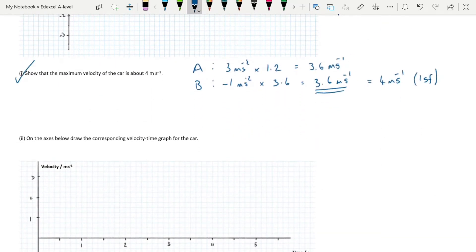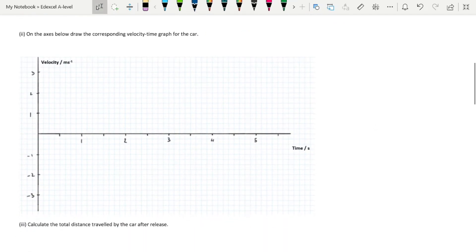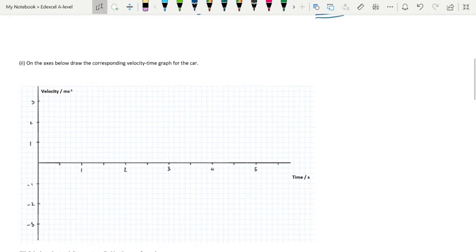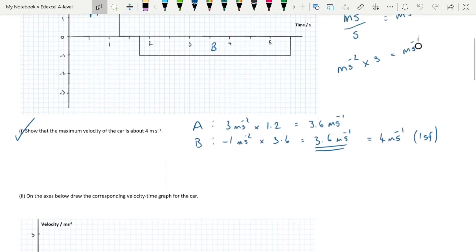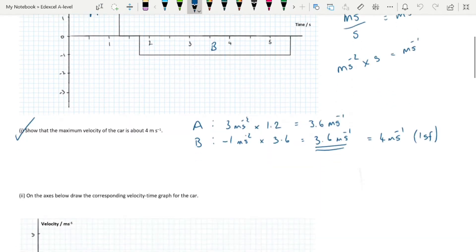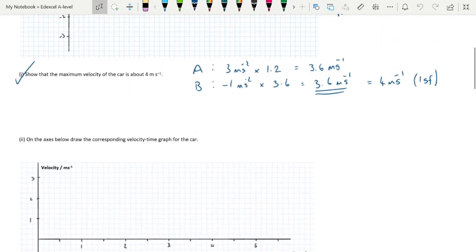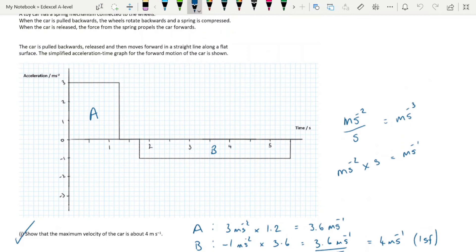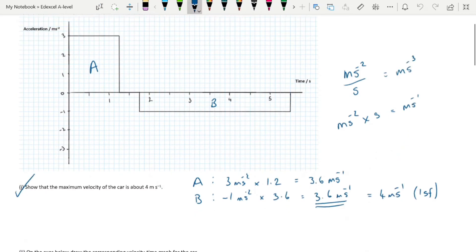So we've done that. On the axes below, draw the corresponding velocity-time graph for the car. We need to know what the velocities are for each section. Let's break it down and look at, for each section here, what the velocity is.